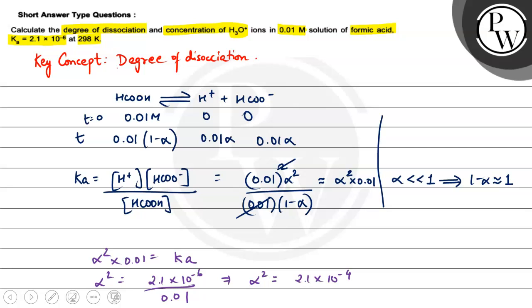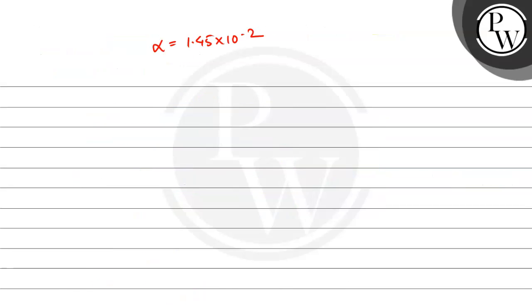Now we can do alpha, so this is the degree of dissociation. So this is how we have found the degree of dissociation.